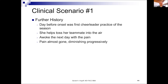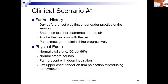Further history was helpful. The day before onset was her first cheerleader practice of the season — she helped toss her teammate into the air and awoke the next day with pain. The pain had diminished progressively and was almost gone at the time of her visit. Physical examination was notable for normal vital signs and oxygenation. Her pain was present with deep inspiration, and she had a tender area over the left upper chest on firm palpation that reproduced her symptom. Her treatment was reassurance. History is really critical — coupled with the examination, it was clear this was musculoskeletal pain.